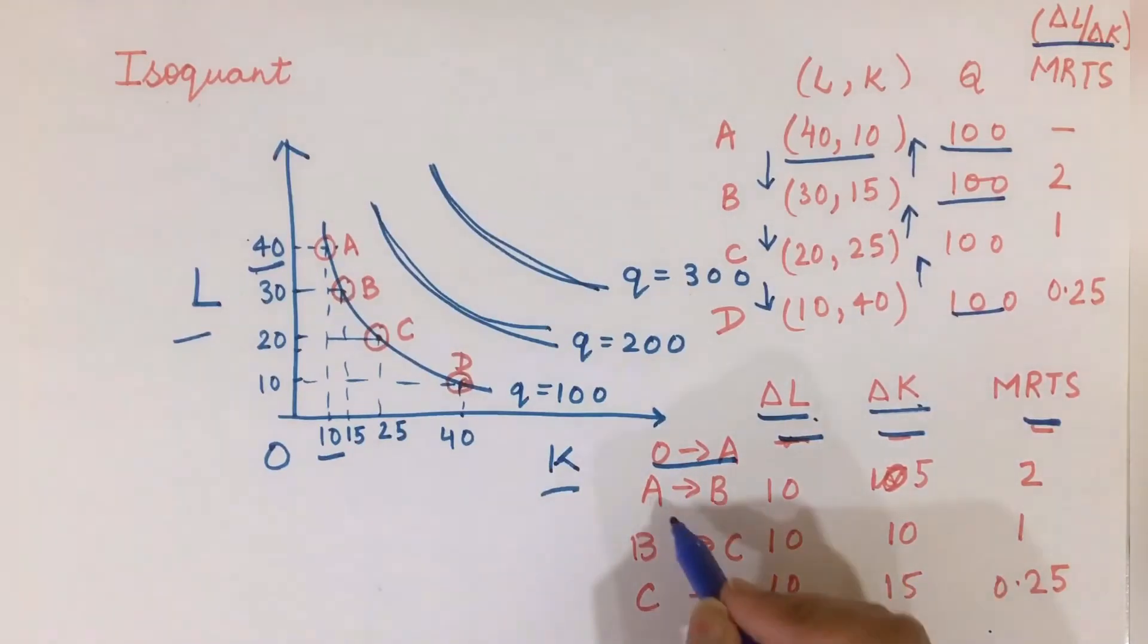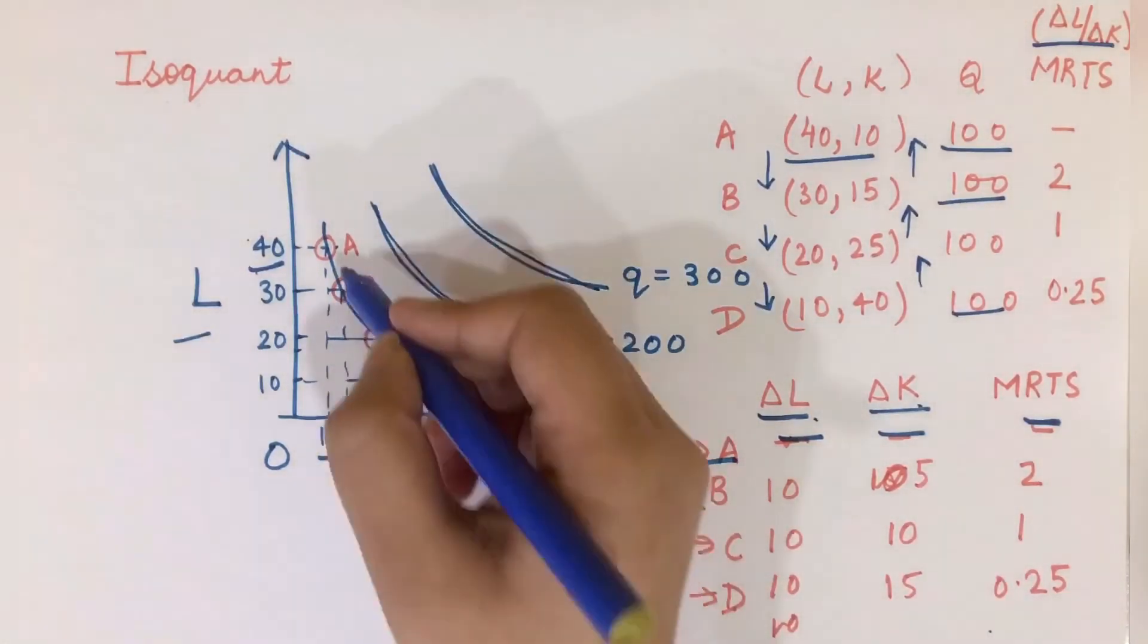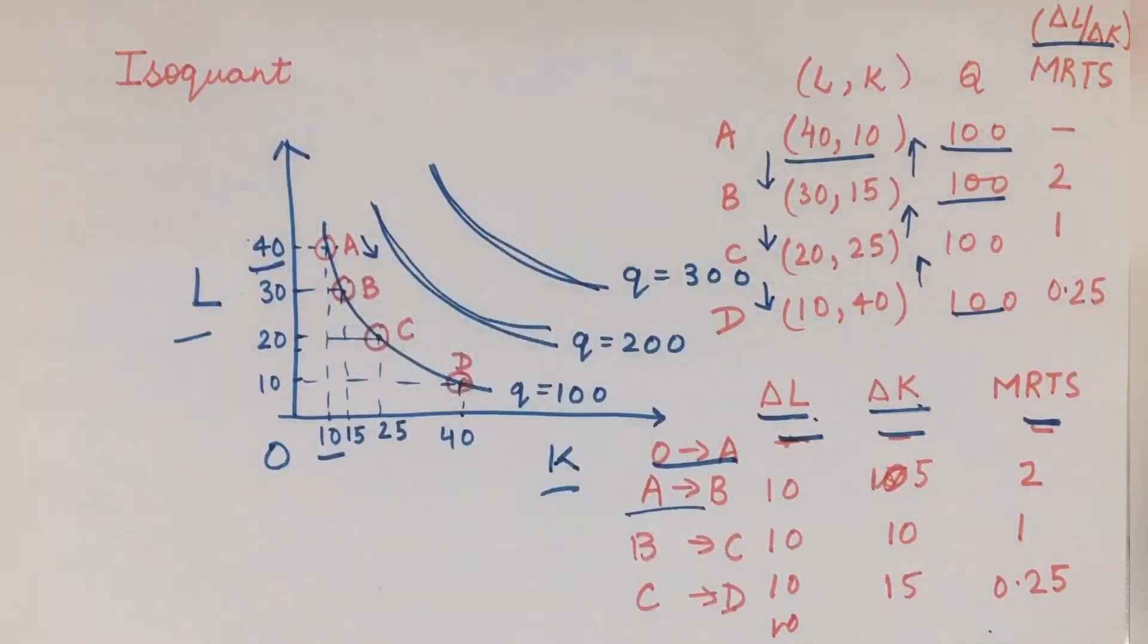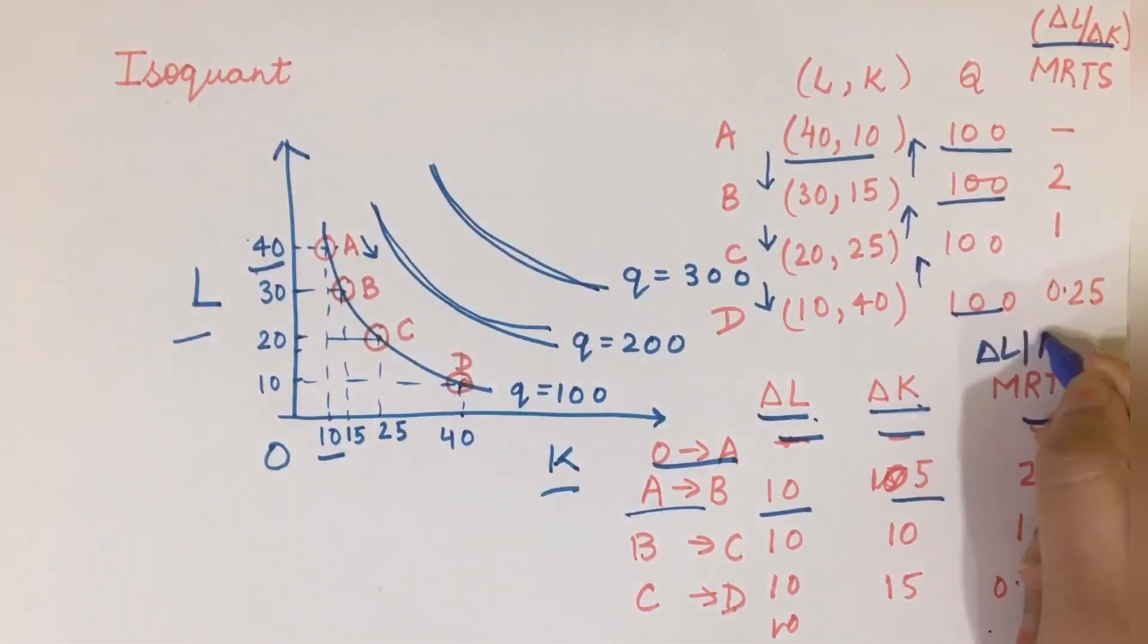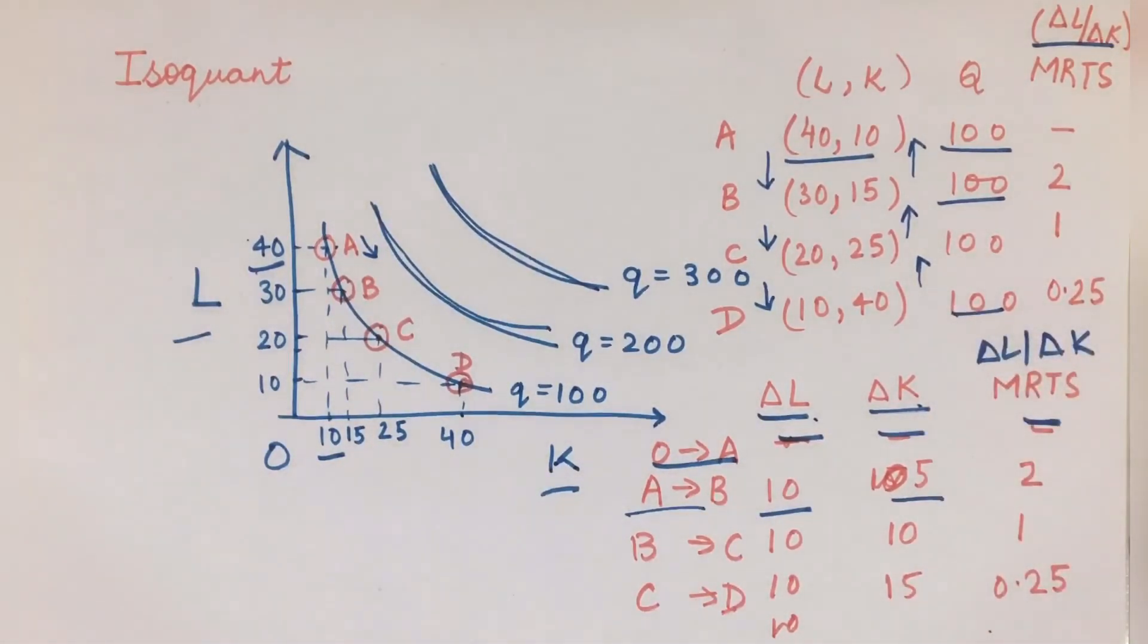Now when I move from A to B, I am traveling down an isoquant. The change in my labor is 10, the change in my capital is 5. We know that MRTS is defined by ΔL/ΔK, so if I take this ratio, it is 2 for this case.